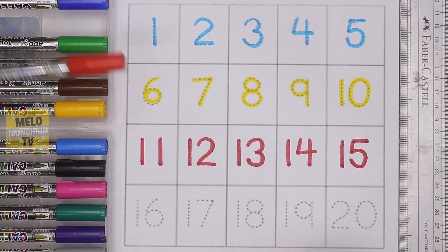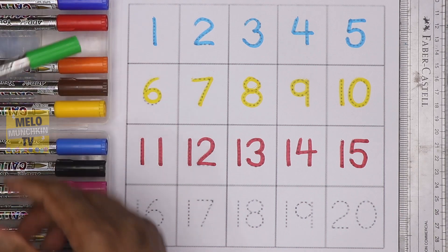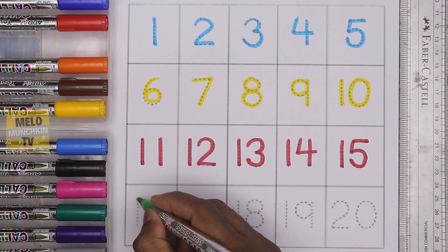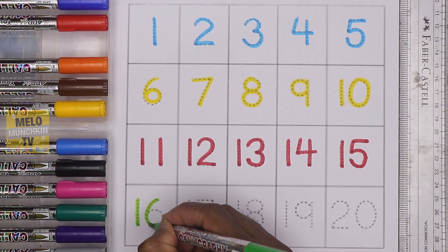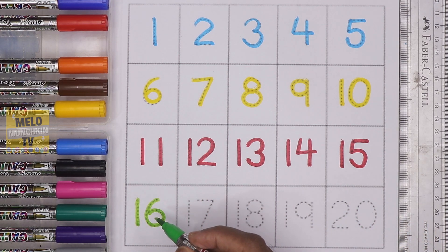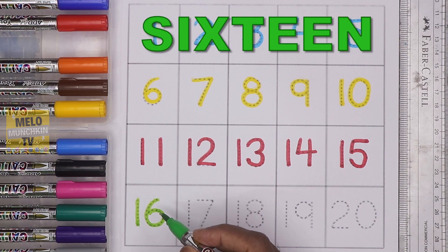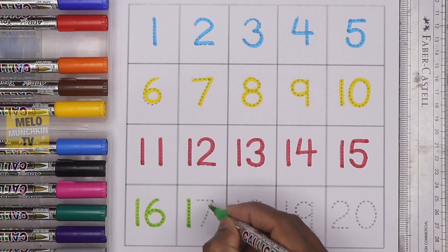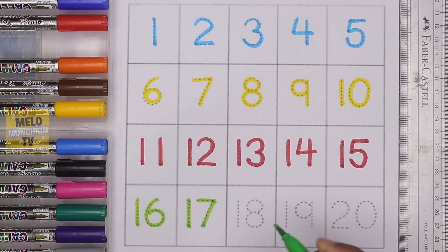Now it's time to change the color. I'll choose light green color. After 15 it is 16, one-six, 16. The spelling is S-I-X-T-E-E-N, 16. After 16 it's 17, one-seven, 17. The spelling is S-E-V-E-N-T-E-E-N, 17.